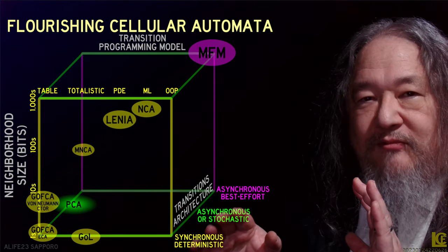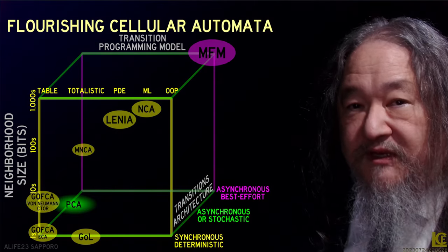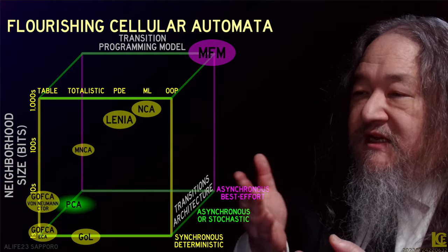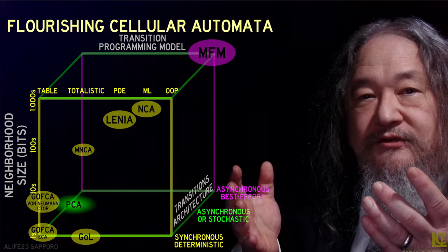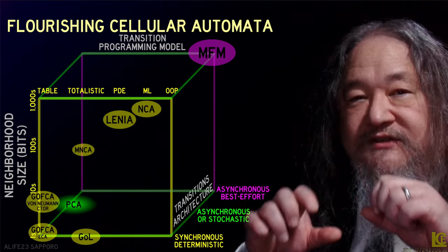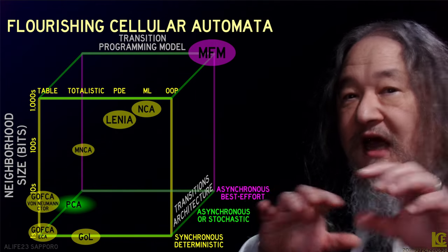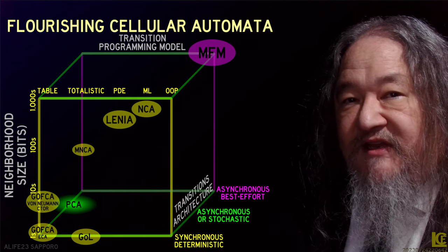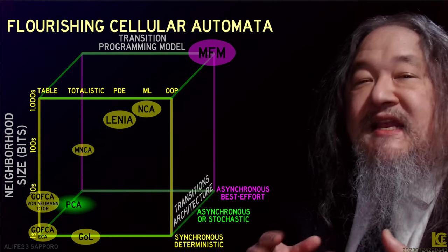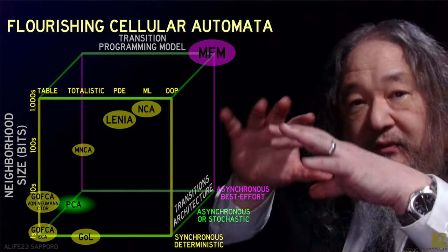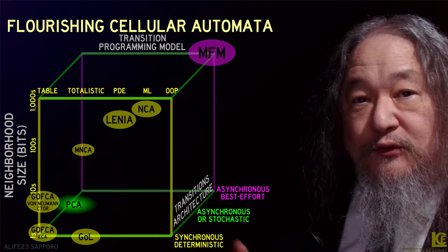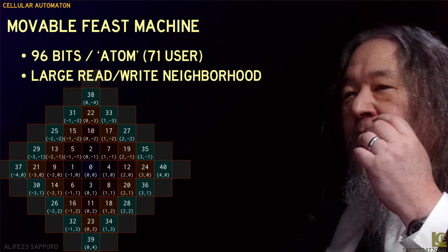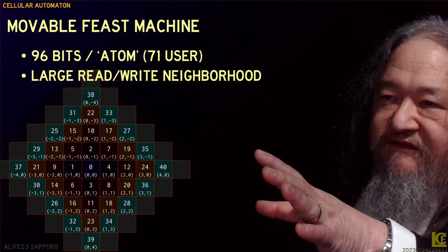And yet the Movable Feast Machine — the model we're using for the demo we just saw — is even worse than that. It's not merely probabilistic because there's no probability distribution of where the events are going to go. The machine is best effort — it tries to deliver reliable events and tries not to starve any site, but it actually can't even guarantee that. Anything might happen — for example, the whole south 40 might lose power and the rest of the system is meant to keep going.